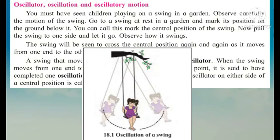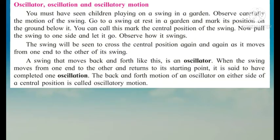Observe how it swings. The swing will be seen to cross the central position again and again as it moves from one end to the other of its swing. A swing that moves back and forth like this is an oscillator. When the swing moves from one end to the other and returns to its starting point, it is said to have completed one oscillation. The back and forth motion of an oscillator on either side of a central position is called oscillatory motion.